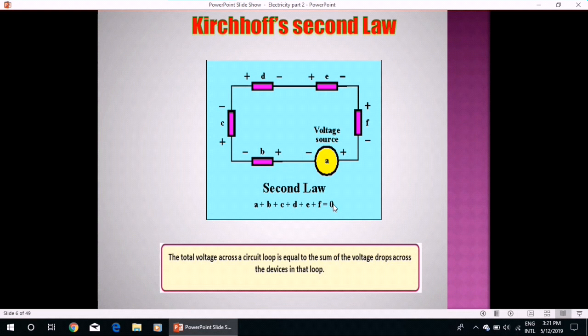Now, charge carriers lose or gain energy, electrical energy, while passing through a circuit component, for example, cell or resistor. Now, essentially, the energy that we put into the circuit equals the energy that we get out of each circuit loop. Kirchhoff's second law is based upon the law of conservation of energy.